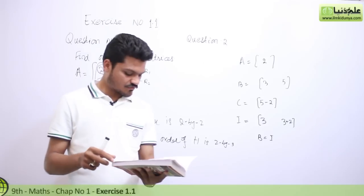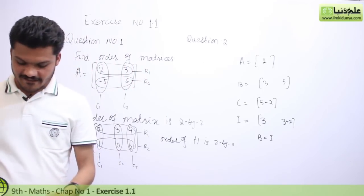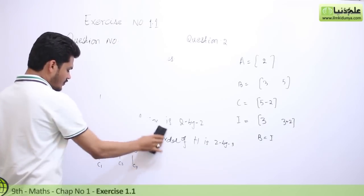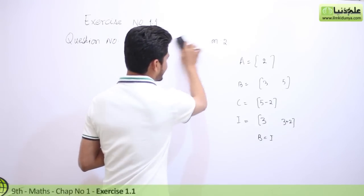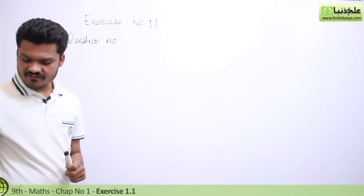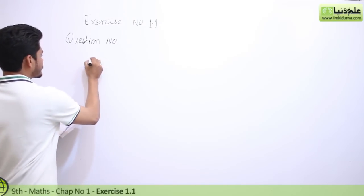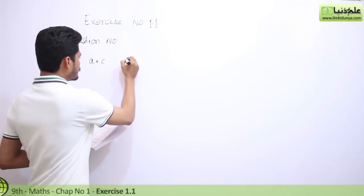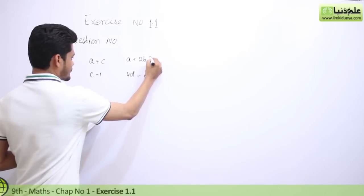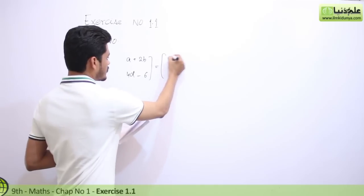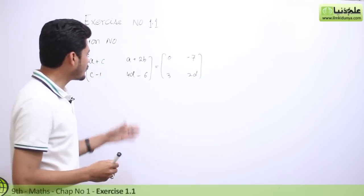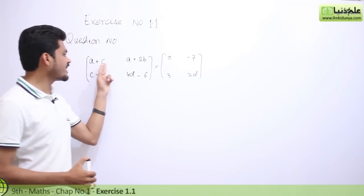If you have any other questions, please comment. Question number 3: find the values of A, B, C, and D which satisfy the matrix equation. We have two matrices with an equality sign. Since both matrices are equal, according to the definition of equal matrices, their order is the same and corresponding entries should be the same.